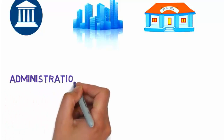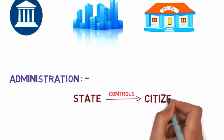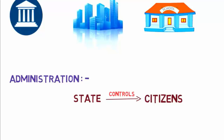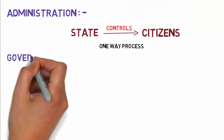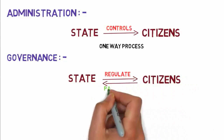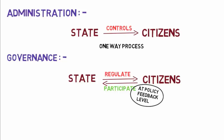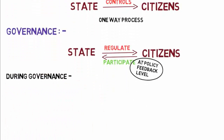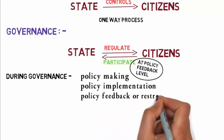The process of running a business or organization is divided into four categories. The first is administration, where a state controls citizens and there is no role for citizens — they just follow the rules made by the state; this is a one-way process. The second is governance, where a state regulates citizens and citizens can participate at the policy feedback level. The state performs three types of work: policy making, policy implementation, and policy feedback or restructuring.